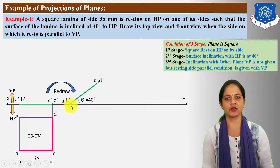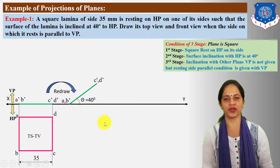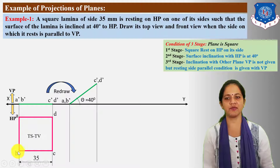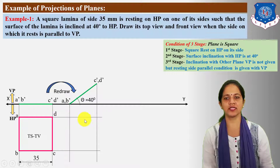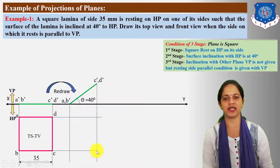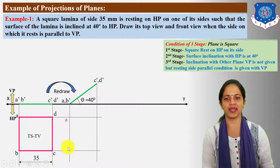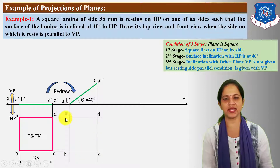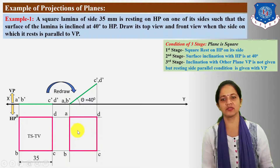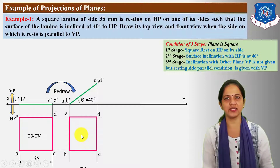For the top view reduced shape, draw vertical projections from the second stage front view points and draw horizontal projections from the A, B, C, D corner points of the square. Where the horizontal and vertical projection lines for each particular point intersect, mark points A', B', C', D'. Connect A', B', C', D' in proper sequence to form a line, indicating the reduced shape in the top view.